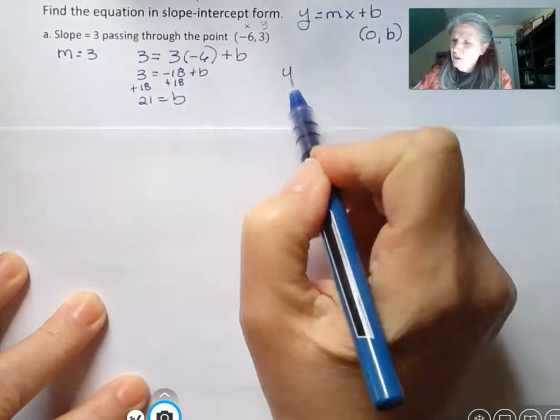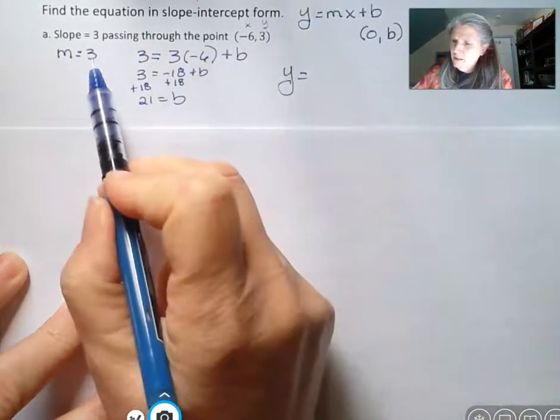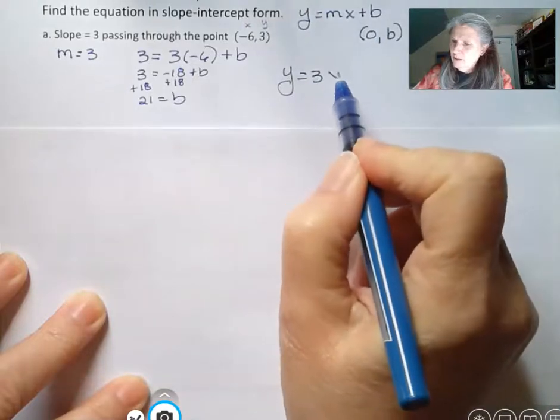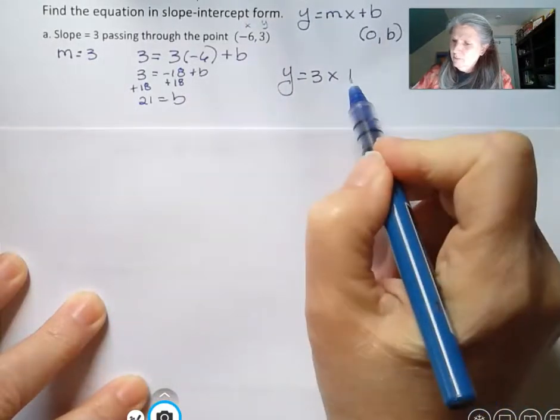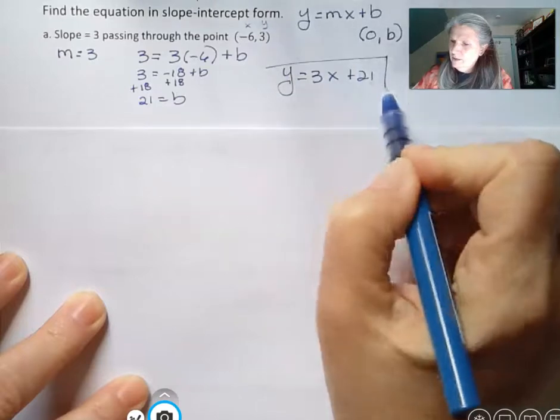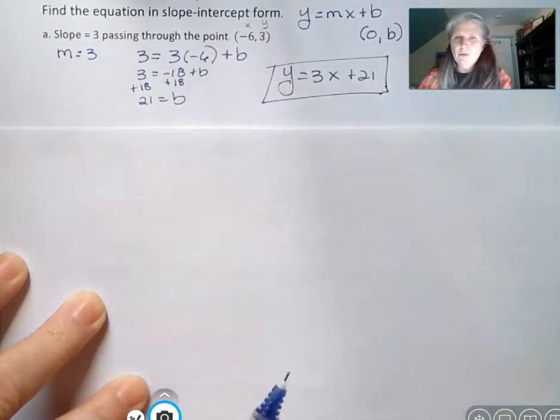And now my equation then is, instead of m I'm going to put 3, and instead of b I'm going to put 21, and that's the equation of a line in slope-intercept form.